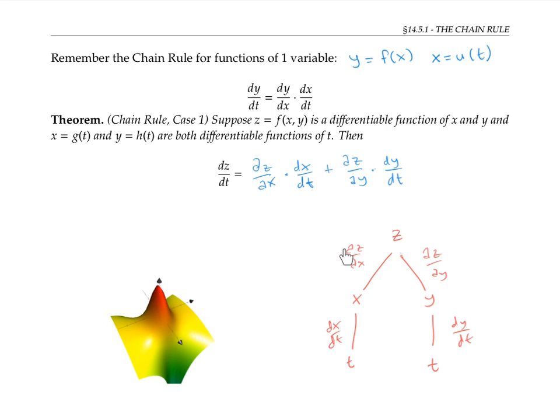Notice that the partial symbol is used for variables that depend on more than one other variable, and the regular derivative sign is used for a variable that depends on a single variable.